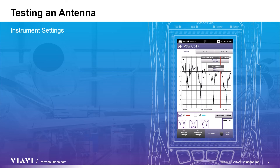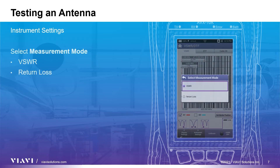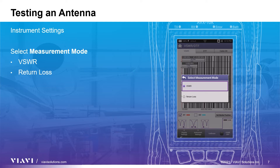With calibration complete and cable type selected, you are ready to test either an antenna or a cable. Let's look at testing an antenna using the VSWR tab. An antenna can be tested using a measurement mode of either VSWR to view readings as a ratio, or return loss to view readings in dB.